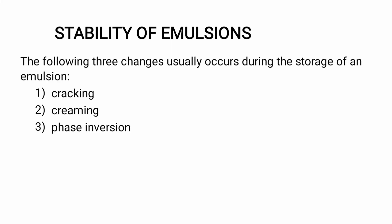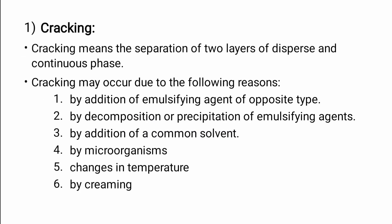Now, the stability of emulsion. There are three possible changes happening in an emulsion: cracking, creaming, and phase inversion. Cracking is when two different layers are separated — the dispersed and continuous phases separate. This can happen due to adding the opposite type of emulsifying agent, precipitation of the emulsifying agent, addition of a common solvent, micro-organisms, or temperature change.